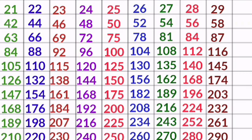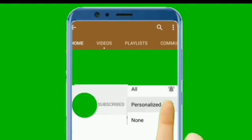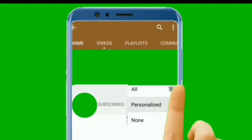30 1s are 30, 30 2s are 60, 30 3s are 90, 30 4s are 120, 30 5s are 150, 30 6s are 180, 30 7s are 210, 30 8s are 240, 30 9s are 270, 30 10s are 300. Thank you. Please subscribe to my channel and press the bell icon to get all my new educational video notifications.